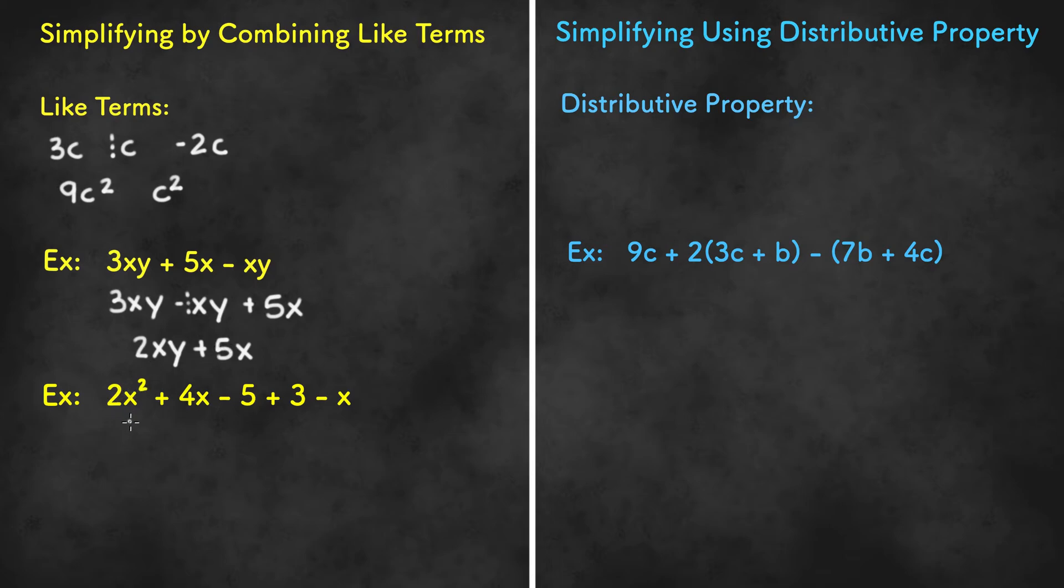In this next example we have 2x squared plus 4x minus 5 plus 3 minus x. So we have two pairs of like terms. We have 4x and negative x, and we also have negative 5 and 3. So let's arrange the expression so that the like terms are closer together. We get 2x squared plus 4x minus x minus 5 plus 3. And now we can simplify.